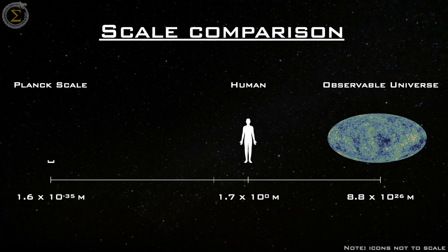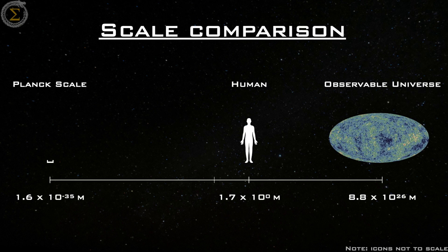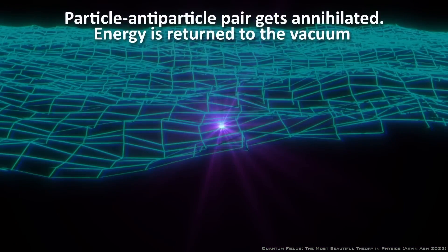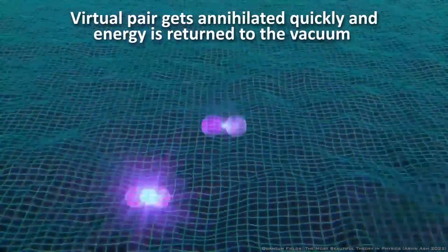Let's review. In this video, we covered the Planck scale, the shortest distance in our universe. Virtual particles which pop in and out of existence in pairs and briefly borrow energy from quantum fields.